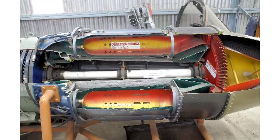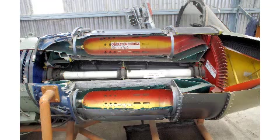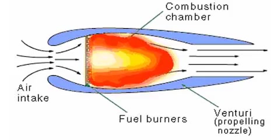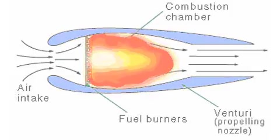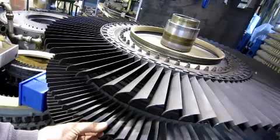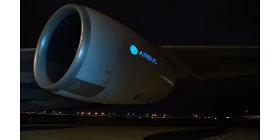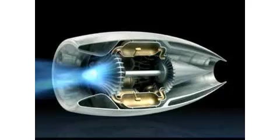Combustor: In this part, the compressed air is mixed with the fuel and ignited. The heat can reach up to 2700°C. Turbine: The exhaust gases are passed through the turbine, causing the turbine blades to rotate. They are fixed on the same shaft on which the compressor is attached.